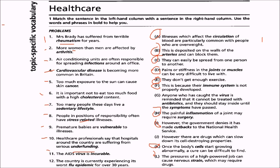Eleventh: the AIDS virus is incurable. This will match with J — however there are drugs which can slow down its cell-destroying properties.